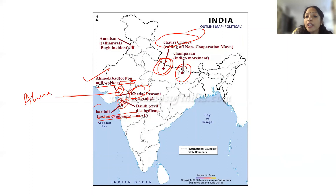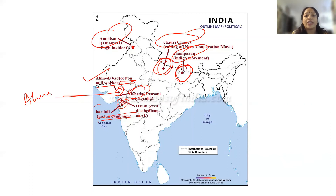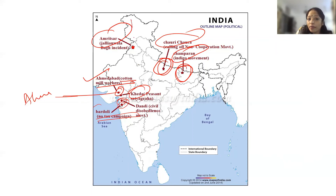Then they can ask you about the indigo planter workers — that is your Champaran. And where the Jallianwala incident or massacre happened — that is Amritsar. These are the places you need to learn for Nationalism in India. It looks very easy, but if you start looking at the map every day, definitely you will get full marks — it's not difficult at all.